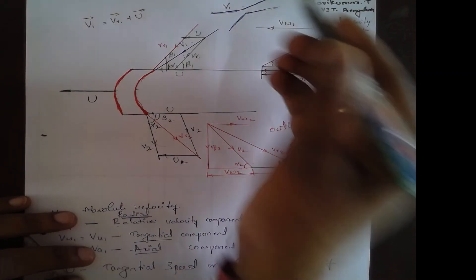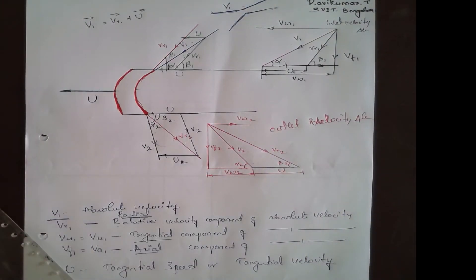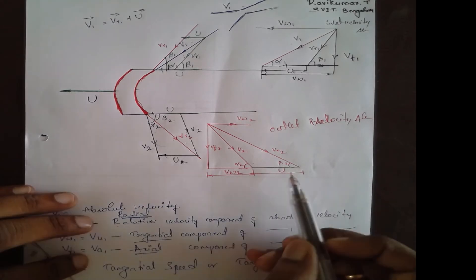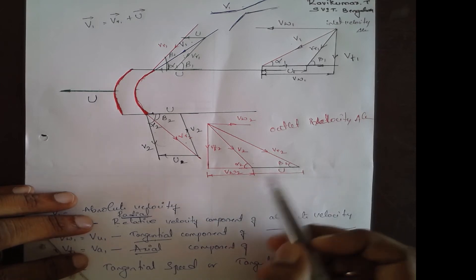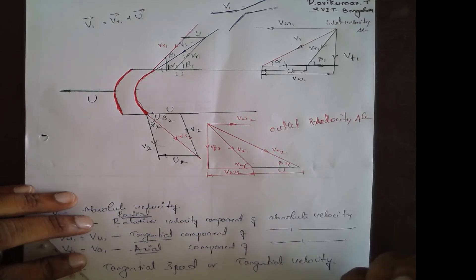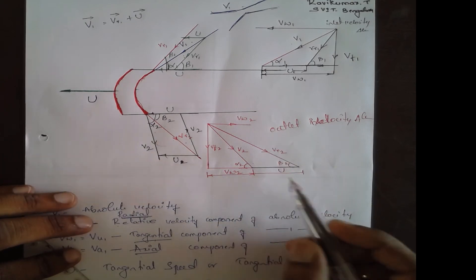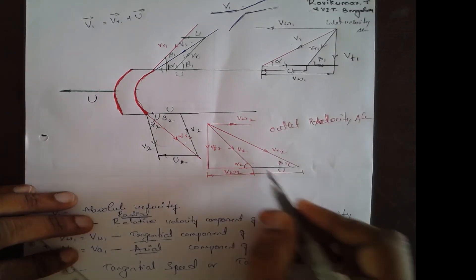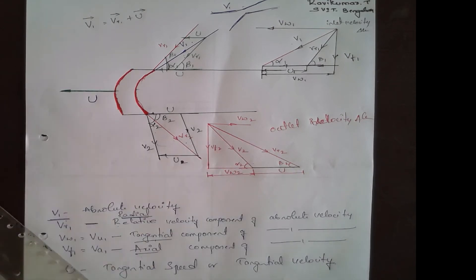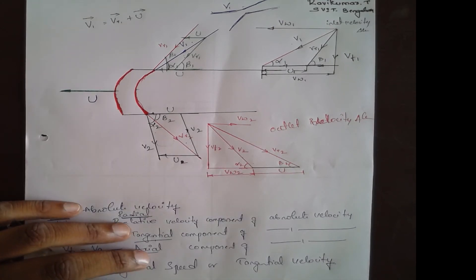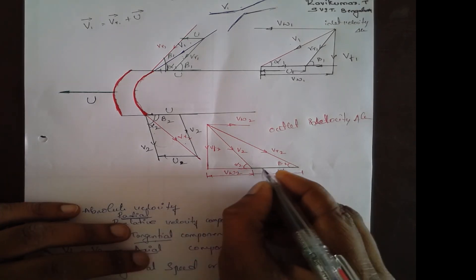An important parameter: when is this velocity triangle applicable? It is applicable when vr2 × cos(beta2) is greater than u, and beta2 must be less than 90 degrees. If beta2 is less than 90 degrees, then this velocity triangle is applicable.